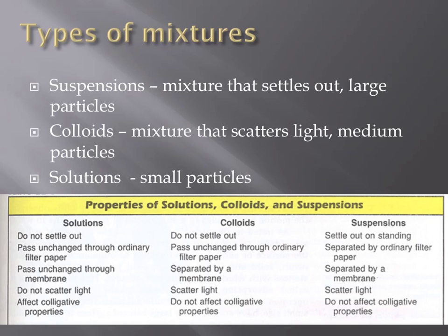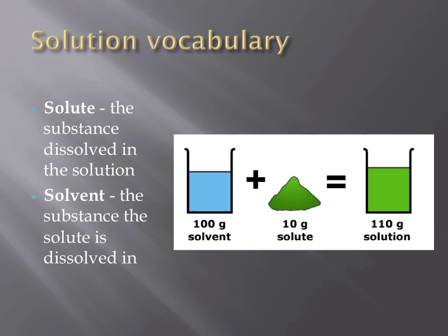An example of a solution would be glucose, which is a type of sugar dissolved in water. The chart at the bottom of this slide outlines some of the most important distinguishing characteristics between solutions, suspensions, and colloids. There are two different components that make up a solution: a solvent, or what something is dissolved in, and the solute, or the substance that is dissolved. Sugar would be the solute and water would act as the solvent. Water is sometimes referred to as the universal solvent because it dissolves so many different things. In mixtures, the amount of solute can be varied because they are not in fixed proportions.